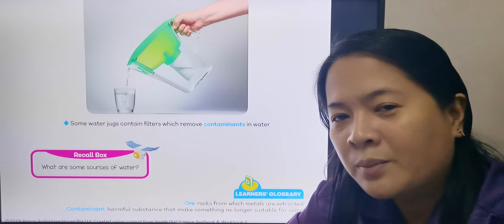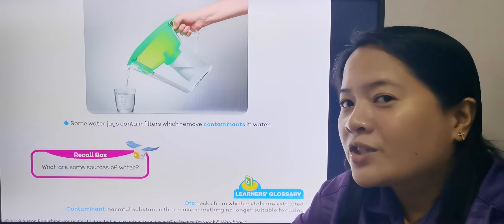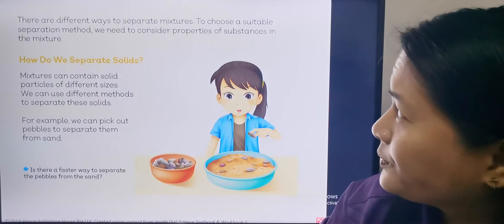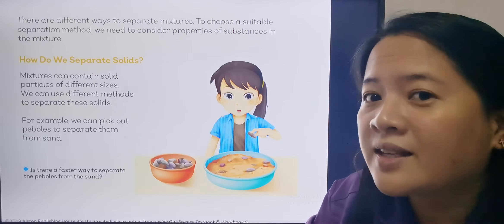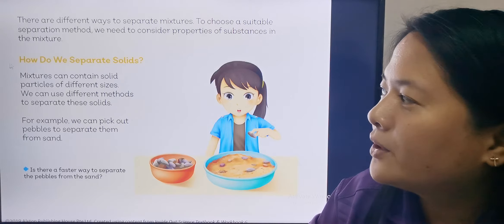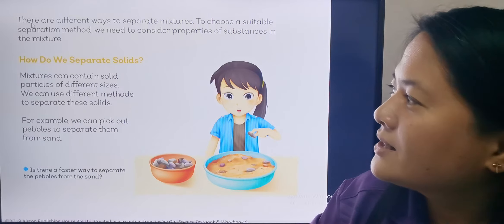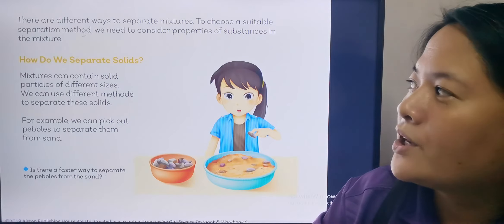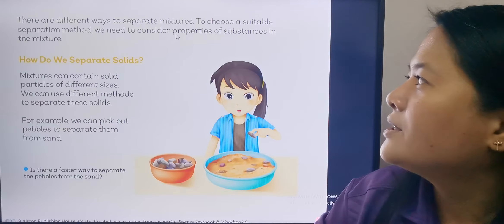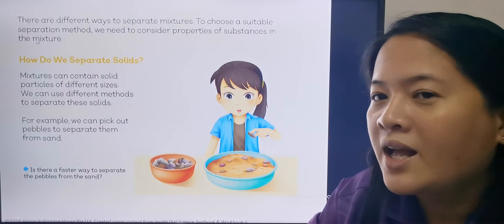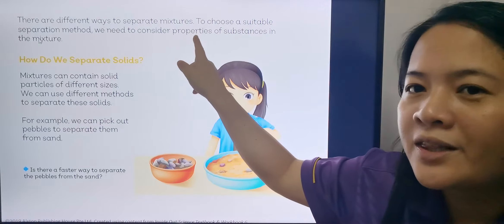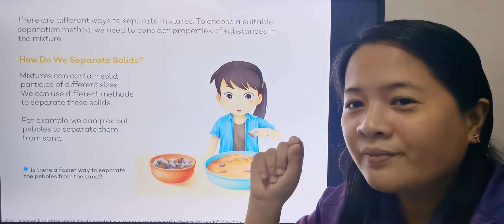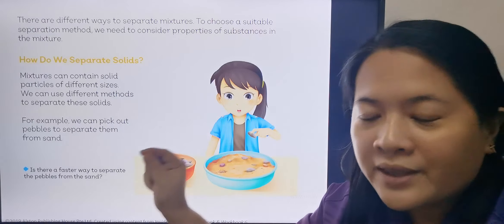In our everyday life, we use separation techniques. We just need to understand what these techniques are. For today, we're going to start about how do we separate solids. There are different ways to separate mixtures. To choose a suitable separation method, we need to consider the properties of substances in the mixture. This word 'properties' is very important — it's in the vocabulary I've shown you. So we need to understand the properties of the substance.